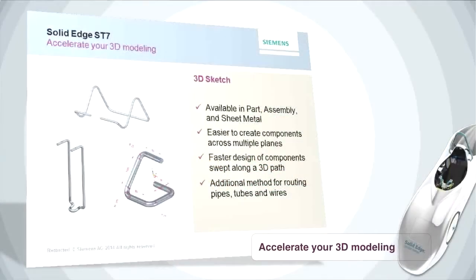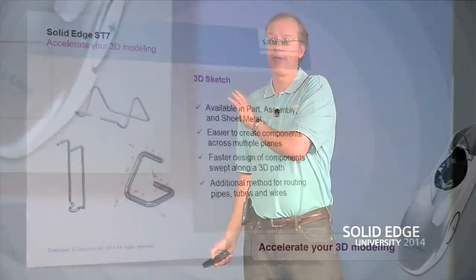3D Sketch was a big effort by a lot of team members — really happy to bring it to you. It's available in part, assembly, and sheet metal environments, with the ability to create across three dimensions very intuitively. It's great for swept features like wires and bent wire, and for those doing tubing or pipe routing, these 3D sketching tools can be the most productive approach alongside the existing ExpressRoute tools.